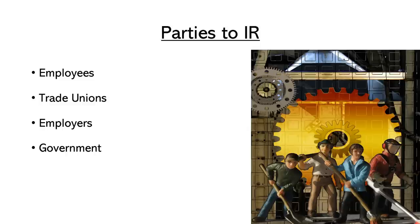These are the various parties involved in Industrial Relations. Sometimes government may introduce a rule, and the people involved in Industrial Relations will help to create a smooth flow of government rules and regulations. So the parties involved are: employees, trade unions, employers, and government.